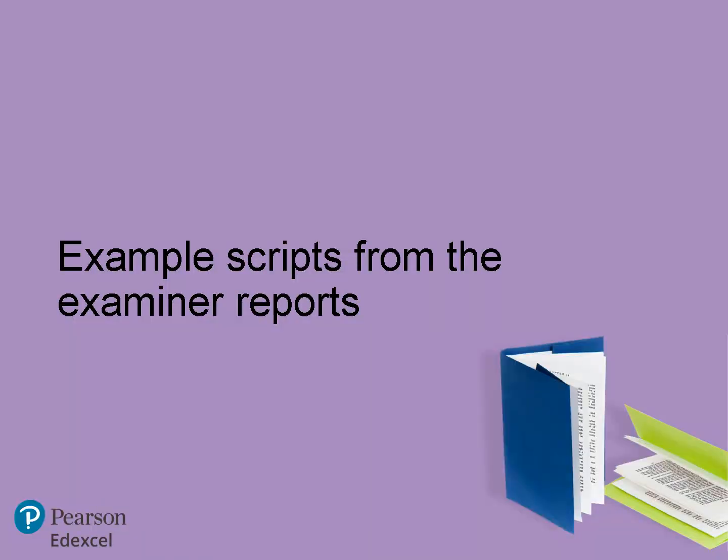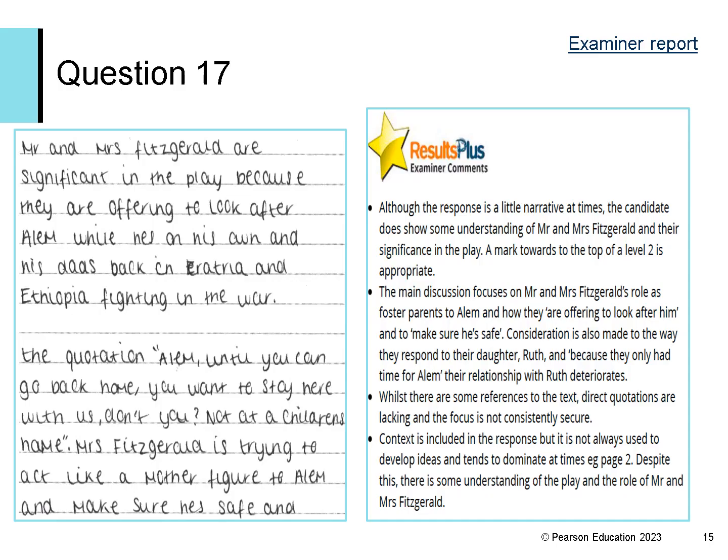I'm now going to use the same examiner reports and look at some brief extracts and exemplars. This is a small extract from a response to question 17 about the significance of Mr and Mrs Fitzgerald — you may wish to look at the exemplar and feedback in full on page 153 of the report. The examiner commented that the response is a little narrative at times, but the candidate does show some understanding of the significance of Mr and Mrs Fitzgerald. Their use of context also shows some understanding, but it's not always used to develop their ideas and tends to dominate at times. Overall, this response gains a mark towards the top of level 2.